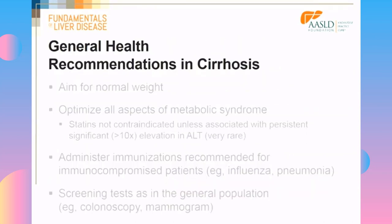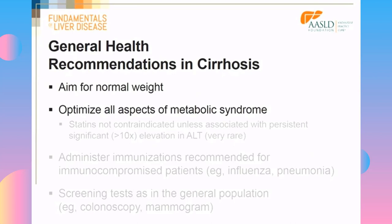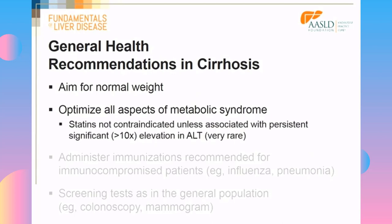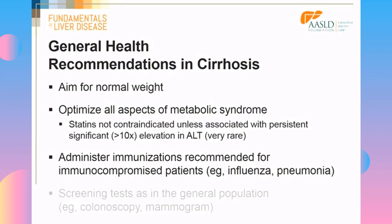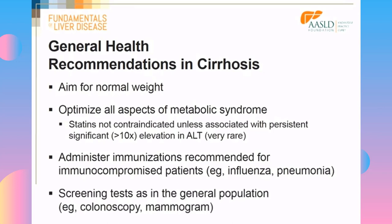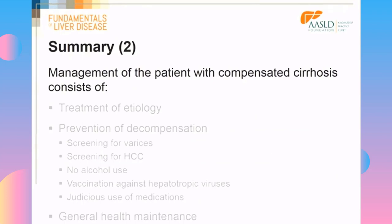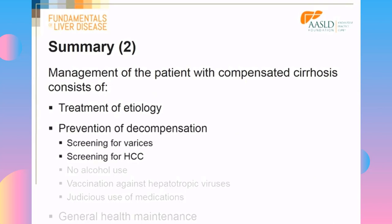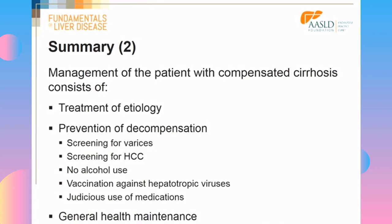In general, follow standard recommendations: aim for normal weight, optimize all aspects of the metabolic syndrome, and note that statins are not contraindicated unless associated with persistent significant elevations in ALT, which is very rare. Administer immunizations recommended for immunocompromised patients, such as influenza and pneumonia vaccines, and perform regular screening tests as in the general population. In summary, management of compensated cirrhosis consists of treating the etiology, preventing decompensation by screening for varices and HCC, no alcohol use, vaccination against hepatotropic viruses, judicious use of medications, and general health maintenance including aiming for normal weight and optimizing the metabolic syndrome.